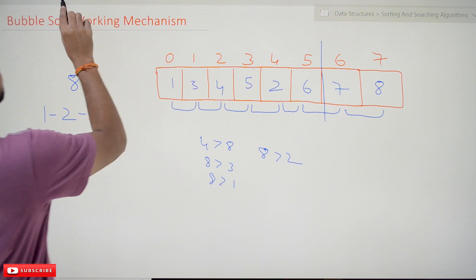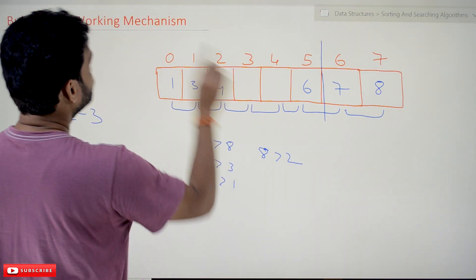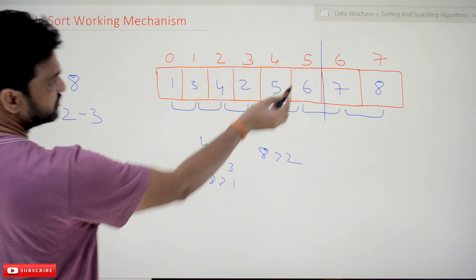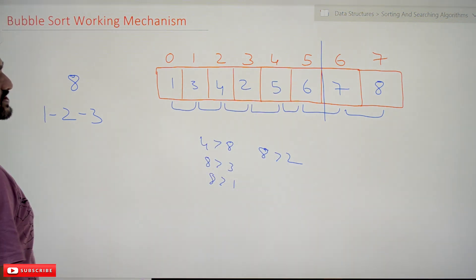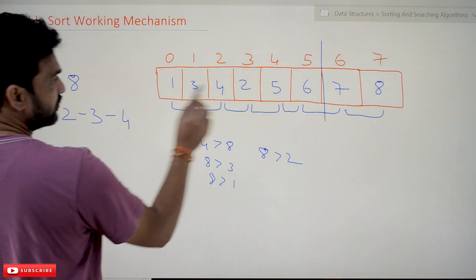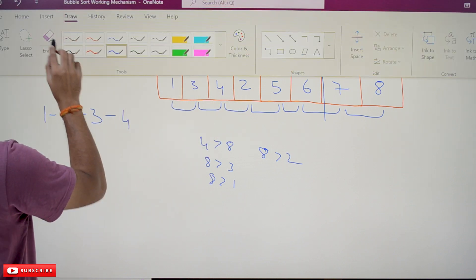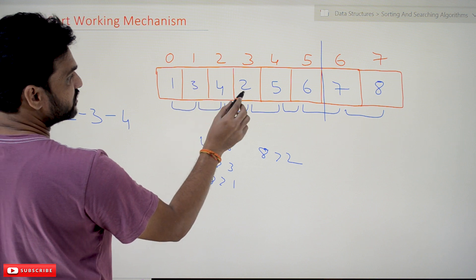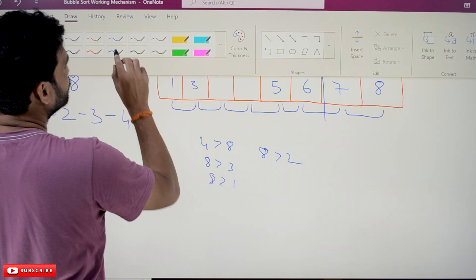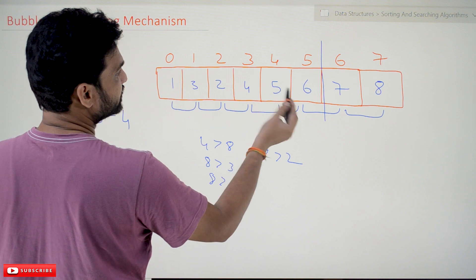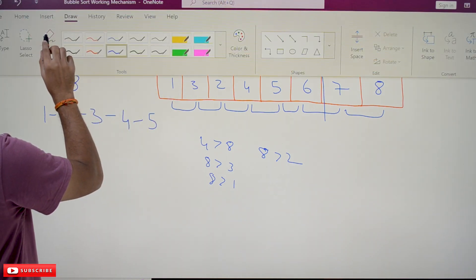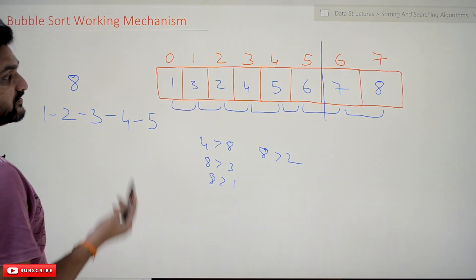5 greater than 2? Yes — swapping is done; 2 and 5 are swapped, 2 comes here. Then 5 greater than 6? No, so 6 stays in position. The third iteration is done. In the fourth iteration, comparisons continue: 1 and 3 — not required; 3 and 4 — not required; 4 and 2 — yes, required; 2 is shifted here. The fourth iteration is complete.